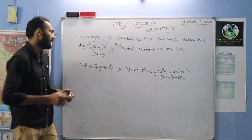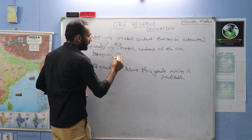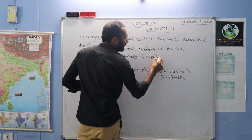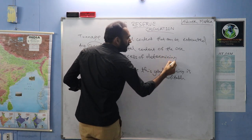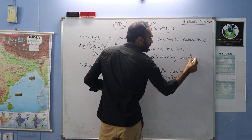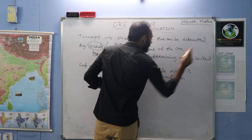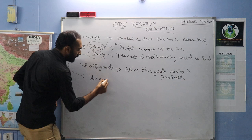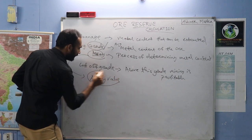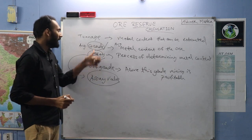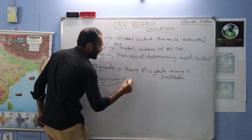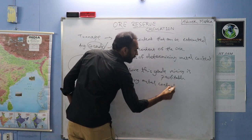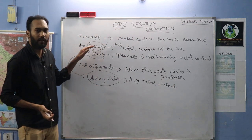Then ASSAY — ASSAY is the process of determining metal content. The outcome of ASSAY is known as the ASSAY value. This ASSAY value is similar to grade; here it is average metal content, and there it is also average metal content. ASSAY value is the same as your grade.